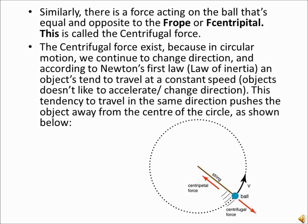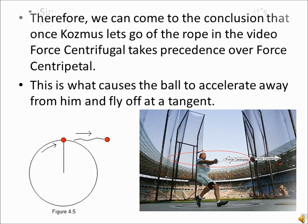But the object doesn't accelerate to the center and crash. The reason behind this is the centrifugal force that pulls the object back and keeps it moving in a circle. This explains why the ball accelerated away from Kozmus as he released it. At this exact moment, the centrifugal force took presence over the centripetal force. So the ball and the rope was able to fly off at a tangent away from Kozmus.